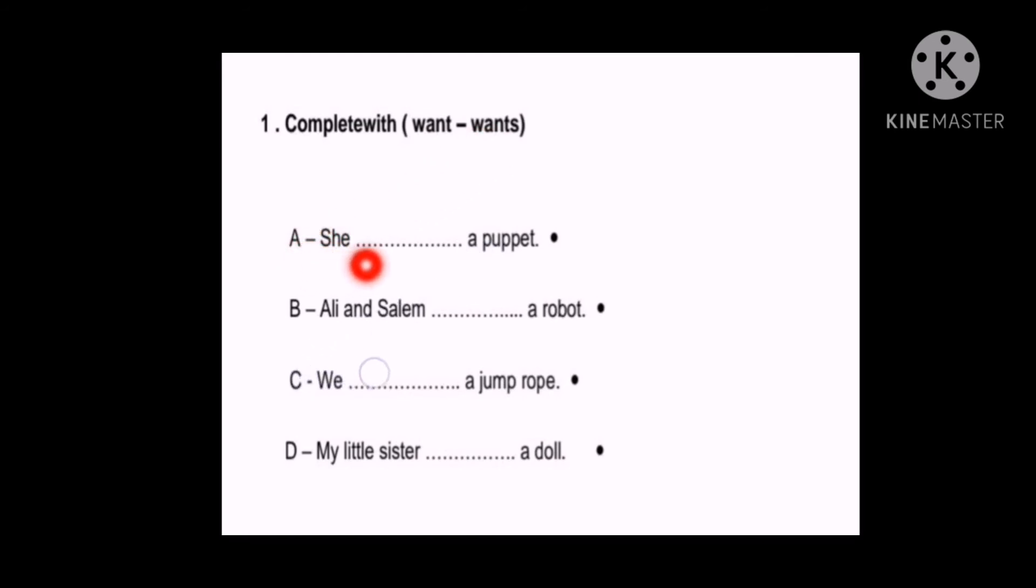Perfect. So we look at the subject in the sentence. Based on this subject, we choose want or wants. So A: She space a puppet. So here she. She is a singular pronoun. What does singular pronoun take? Wants. So she wants a puppet. Excellent.